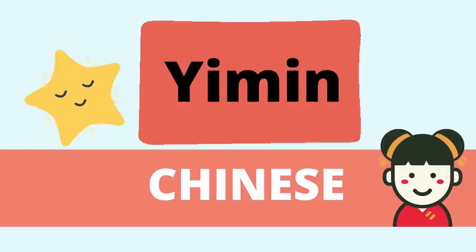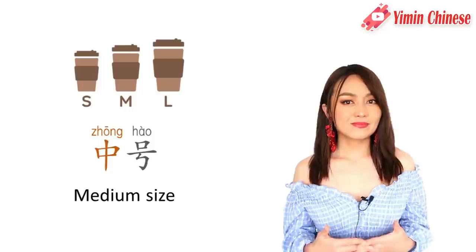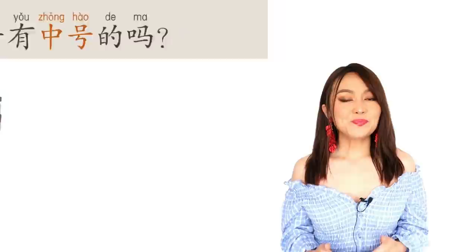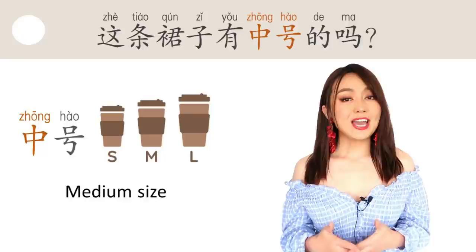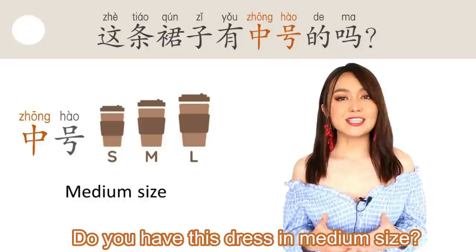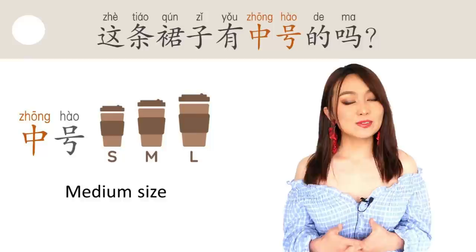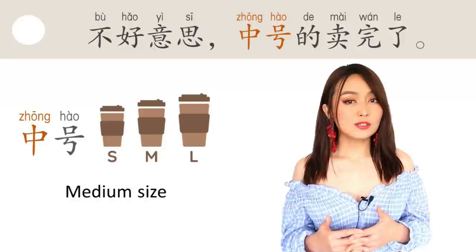The first one: 中号, medium size. For example, 这条裙子有中号的吗? Do you have this dress in medium size? Another sentence: 不好意思，中号的卖完了。 Sorry, the medium-sized ones are sold out.